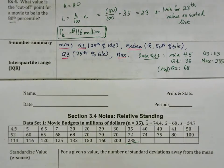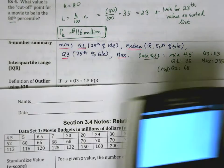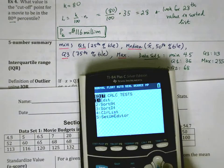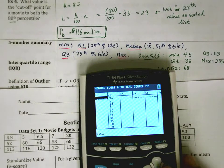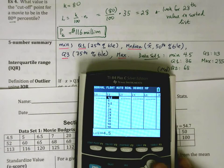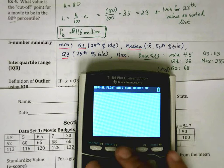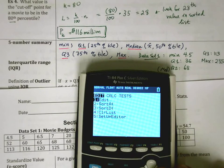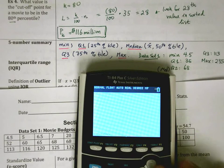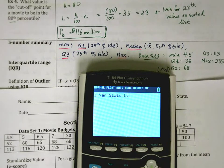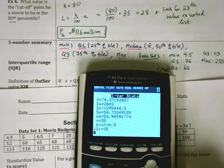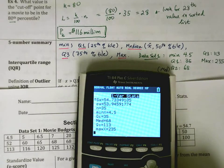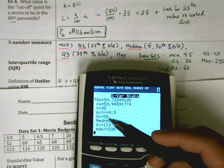What I also did was type this whole thing into a list. I went to my TI-83/84 calculator, typed that all into a list, ran Stat → Calc → One Variable Stats, and typed in the name of the list. You can see this gives me everything as well — this is how I got these numbers. If you scroll down to the bottom, it will give you min, Q1, median, Q3, and the max value.